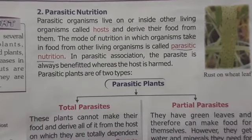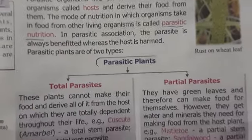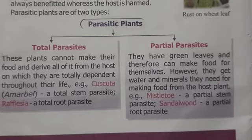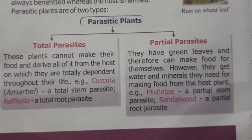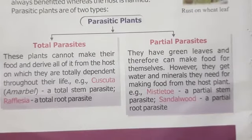Parasitic nutrition is of two types: the first one is total parasites and the second one is partial parasites.